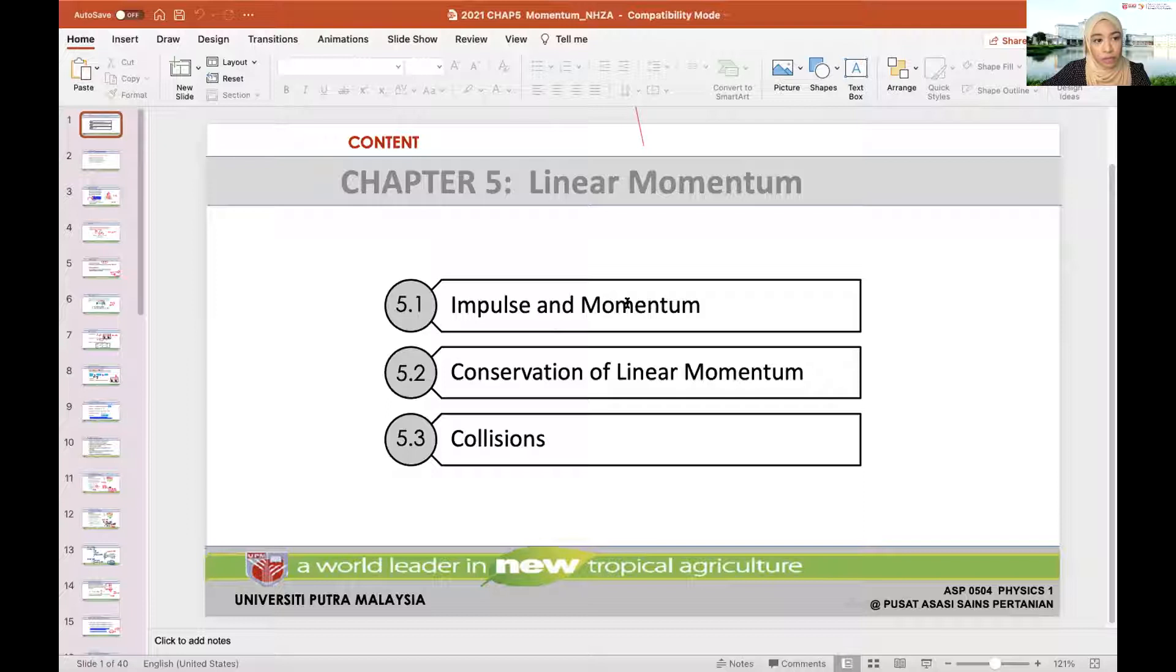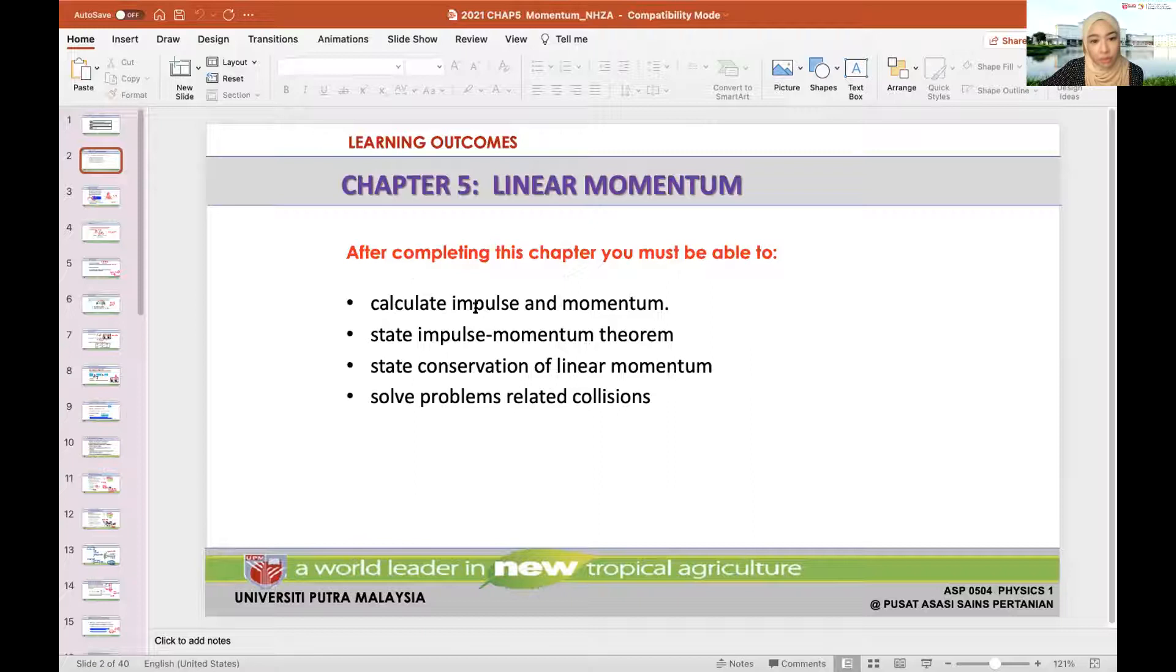My aim today is to cover up until section 5.2 because it's fairly short and Chapter 5 is not that hard compared to Chapter 4. The learning outcome is to know how to calculate impulse and momentum, to state the impulse momentum theorem, and also to state the conservation of linear momentum. In Chapter 4 we learned about conservation of energy; here we are learning about conservation of momentum.